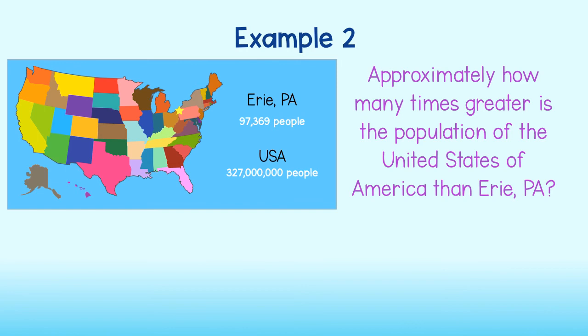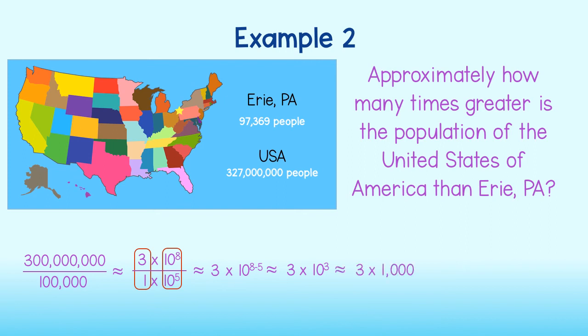We will approximate the population of the U.S. as 300 million divided by the population of Erie, approximated at 100,000. Written as a single digit number times the power of 10, we get 3 times 10 to the 8th over 1 times 10 to the 5th. We simplify to get 3 times 10 to the 8 minus 5 or 3 times 10 to the 3rd. Keep going to get 3 times 1,000 or 3,000. The population of the United States is approximately 3,000 times greater than that of Erie, Pennsylvania.